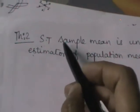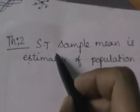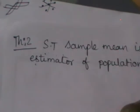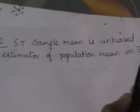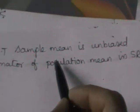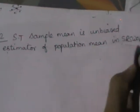The next theorem in simple random sampling states: show that sample mean is an unbiased estimator of population mean in SRS or SRSWOR. You need to prove that sample mean is an unbiased estimator of population mean in SRS.